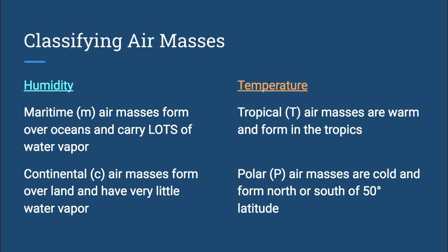We also look at temperature. Tropical air masses, with a capital T, are warm and form in the tropics. Polar air masses, with a capital P, are cold and form north or south of 50 degrees latitude, which means that polar air forms near the Arctic and Antarctic. And that air, obviously, is going to be cold.